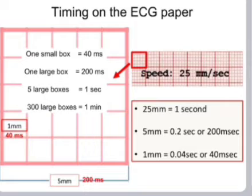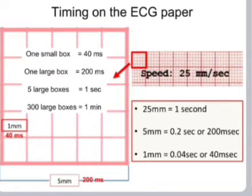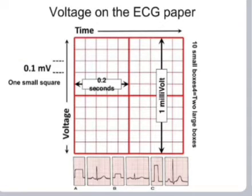Timing on the ECG paper: speed is 25 mm per second. One small box equals 40 milliseconds; one large box equals 200 milliseconds; five large boxes equal one second; 300 large boxes equal one minute. One mm width equals 40 ms; 5 mm equals 200 ms; 25 mm equals one second. For voltage, one small square equals 0.1 millivolt.